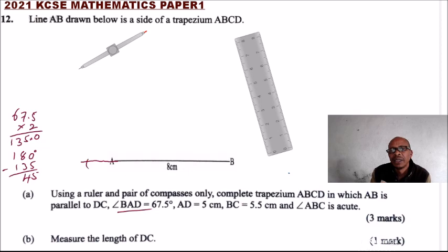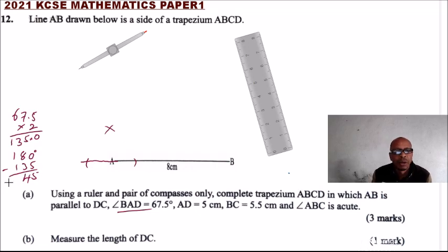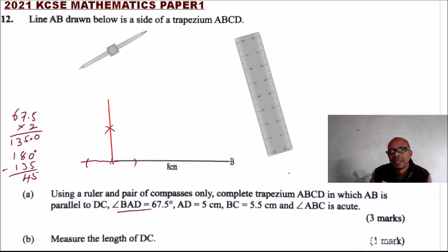To construct 45 degrees, what you do is extend the line, make a mark there and a mark there. You then construct an angle of 90 degrees — using that mark, make a mark there and using the other mark, make a mark there — so you will be able to draw an angle of 90 degrees.